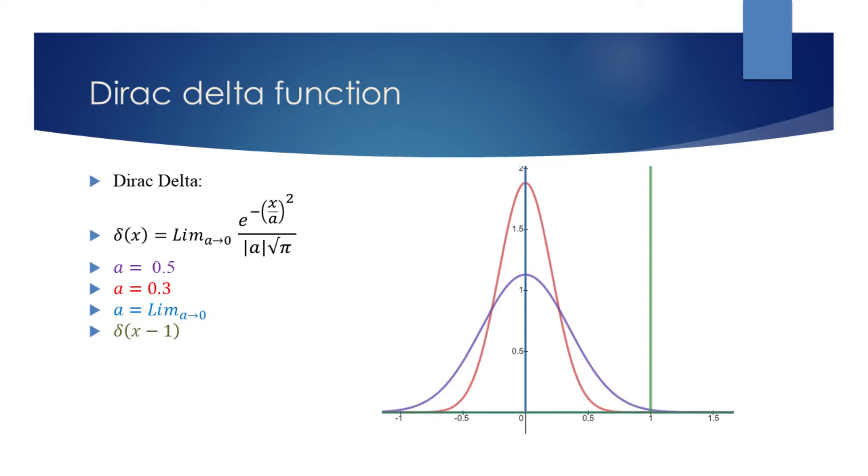In case we would want to concentrate all of the probability mass at a point other than 0, we could shift this function. For example the green plot shows a Dirac delta function shifted to x equals 1.